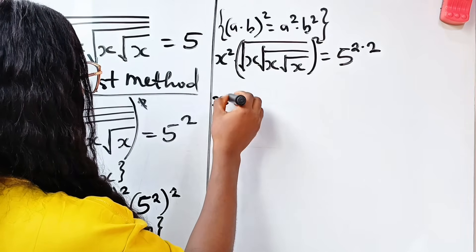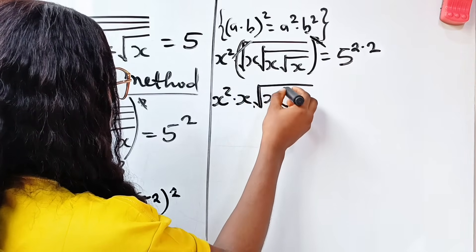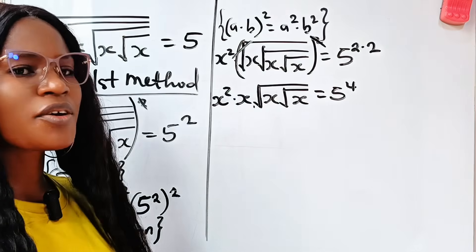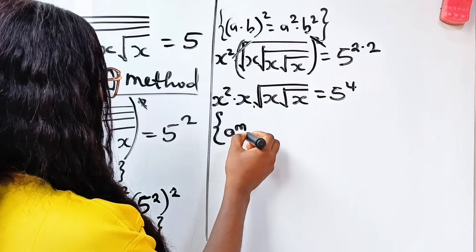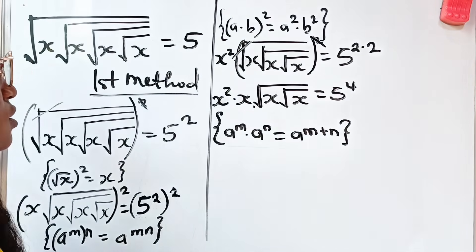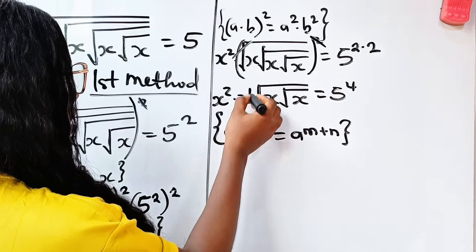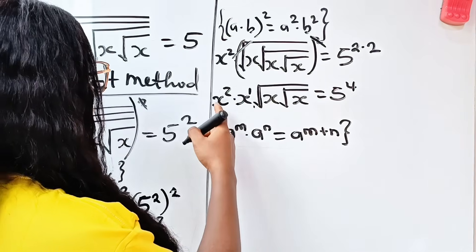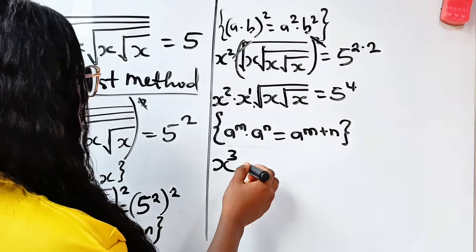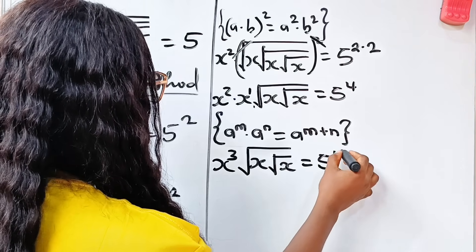So we have x squared multiplied by — this removes — and we have x, then root x, root x, equal to 5 to the power of 4. Now remember that a to the power of m multiplied by a to the power of n is equal to a to the power of m plus n. Applying this, we have x to the power of 1, so x times x gives us x to the power of 2 plus 1, which is 3. Then we have root x, root x remaining, equal to 5 to the power of 4.